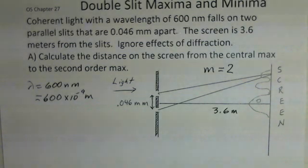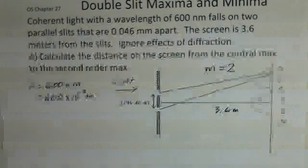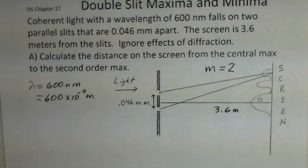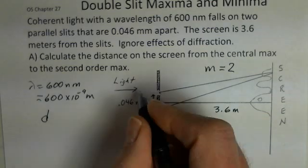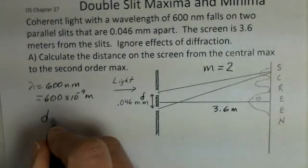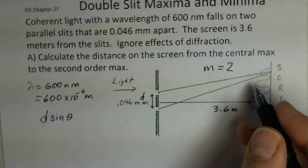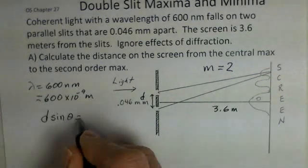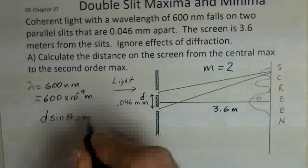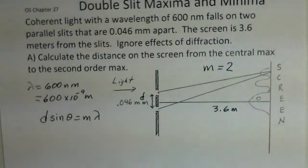Our equation that's governing this calculation is the separation of the slits d times the sine of the angle to the maximum on the screen equals an integer m, 0, 1, 2, 3, etc., times the wavelength.